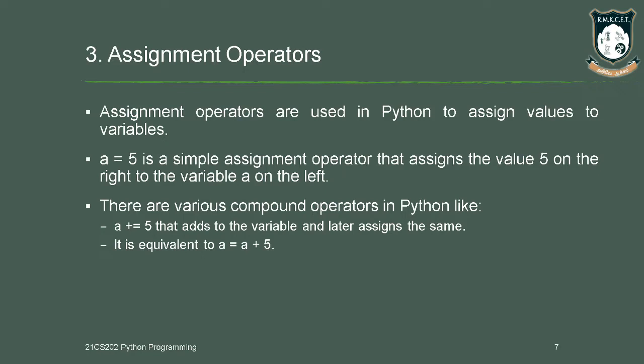On the left hand side you can see the variable name a and the value 5 is assigned to it. We can also cut short the expression. For example, a plus equal to 5 means the value 5 will be added to the value already available in variable a. This is equivalent to a is equal to a plus 5.